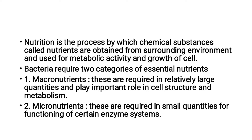Bacteria require two categories of essential nutrients. The first one is macronutrients, and the second one is micronutrients. Macronutrients are available in large quantities and are very important for cell structure and metabolism. Micronutrients are required in small quantities and are needed for the functioning of certain enzyme systems.